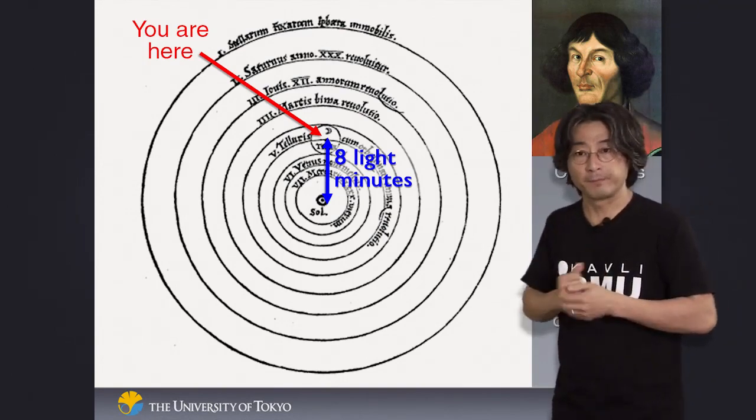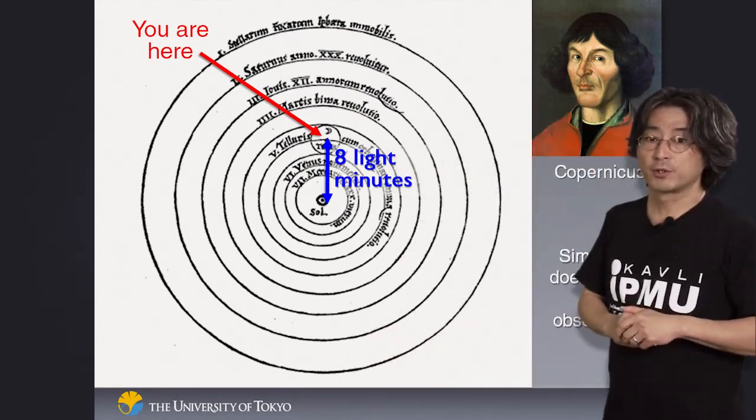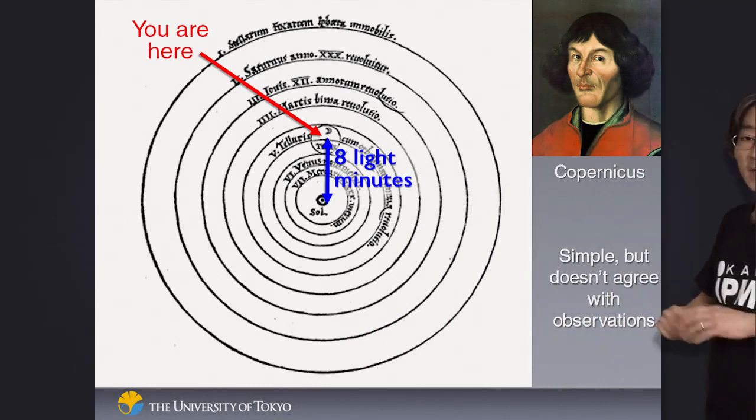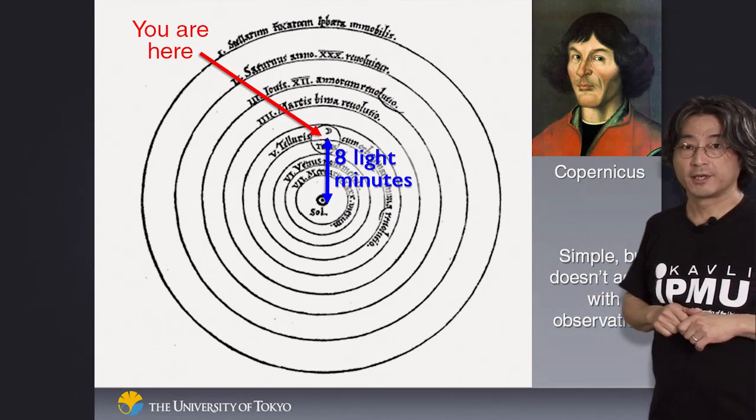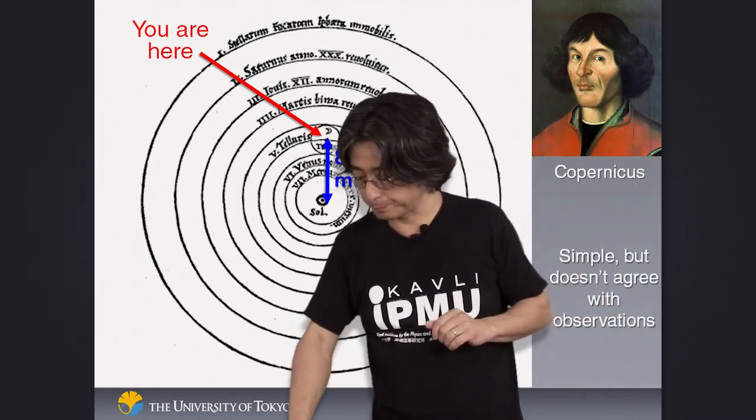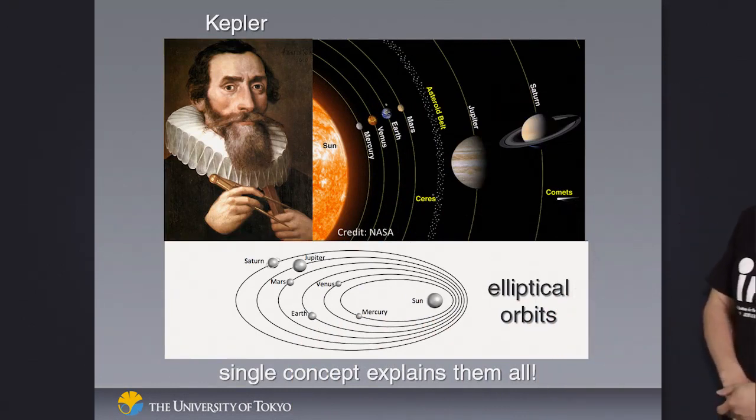But there was still a problem. If you really look closely at the motion of the planets based on this idea, it looks very simple but doesn't quite agree with observations either. There was still a problem people had to solve. As you know, it was solved only after Kepler.